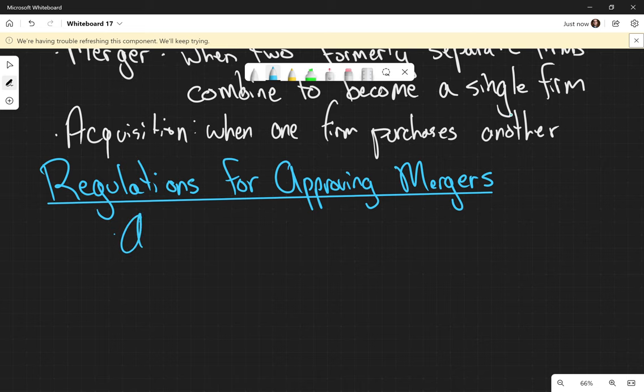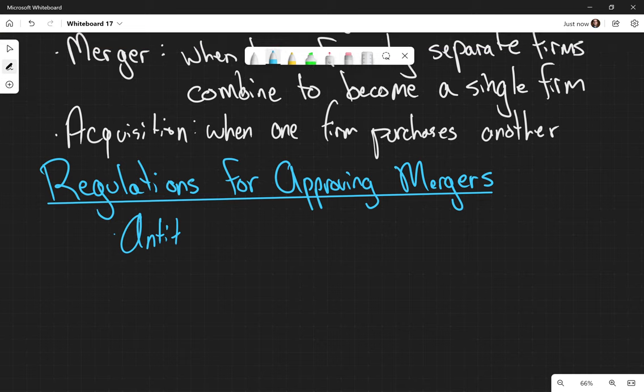And so part of the outcome of such suspicions of mergers and acquisitions and the impact on the quality of the products and the variety of the products and the price of the product, we created antitrust laws.